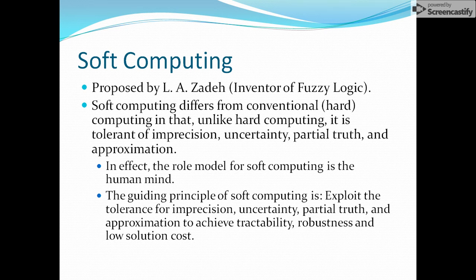In soft computing we have a lack of accuracy — we are not saying everything is completely accurate, so it is imprecision. It is not certain that you will get a result every time, the result may not be completely true but could be partially true, and it will be approximate. The role model for soft computing is the human mind — how it thinks, works, and solves calculations. Generally, a human mind's calculations are not completely precise, not completely certain, could be partial truth, and are approximate.